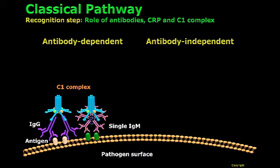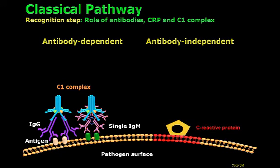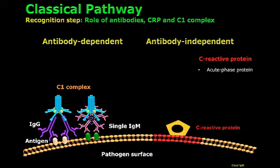The second mechanism is independent of antibodies, or so-called antibody-independent recognition of danger. Here, CRP, or C-reactive protein, plays a fundamental role. CRP is considered an acute phase protein, which means it is highly produced upon an inflammatory process that occurs, for instance, in bacterial infections and cardiovascular disease, where there is tissue damage.